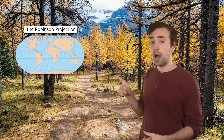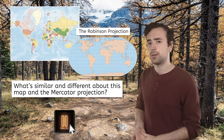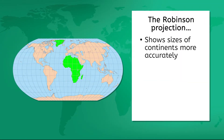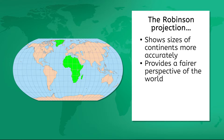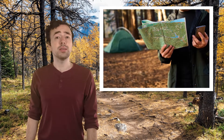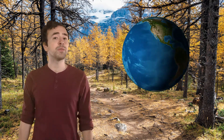Now let's check out the Robinson projection. What's similar and what's different compared to the Mercator? The Robinson projection shows sizes of continents more accurately — Greenland is much smaller than Africa here, just like in real life. And even though Europe is still centered, by representing the true sizes of continents this projection provides a fairer perspective of our world. It still isn't perfect though: the shape of land masses are distorted near the edges, and directions between two points aren't accurate, making it less useful for navigation. Understanding the accuracies and inaccuracies of different map projections helps us choose the right map for the right purpose, and reminds us that every map has a perspective that can influence our view of the world.